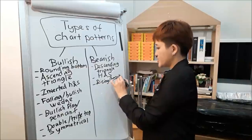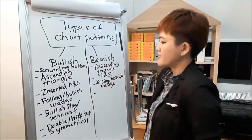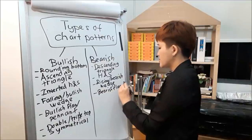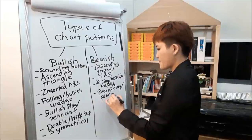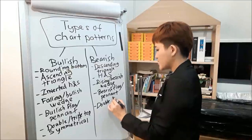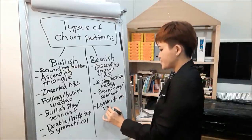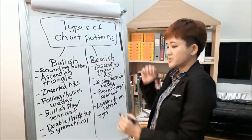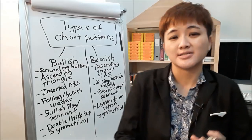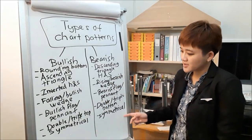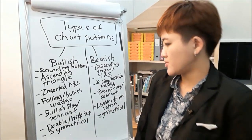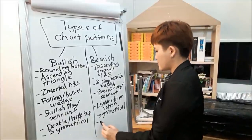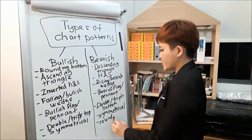Bearish chart patterns include: descending triangle, head and shoulders, rising or bearish wedge, bearish flag, bearish pennants, double or triple bottom, and symmetrical triangle if it breaks downwards — since symmetrical triangle is a neutral pattern, whether it's bullish or bearish depends on where it appears and where the price breaks out from. Also included is rounding top.